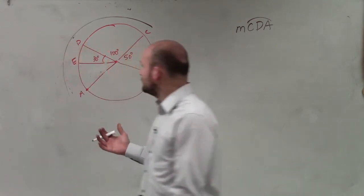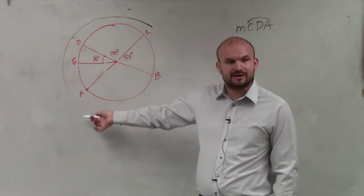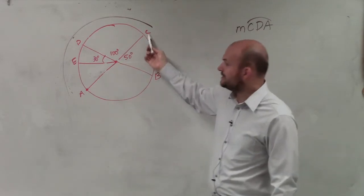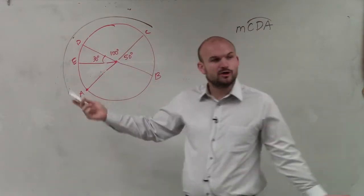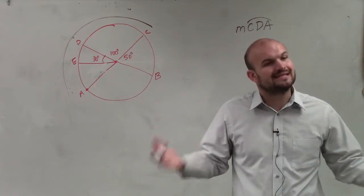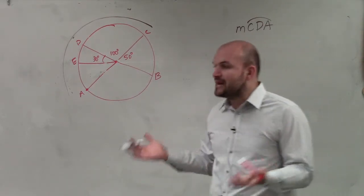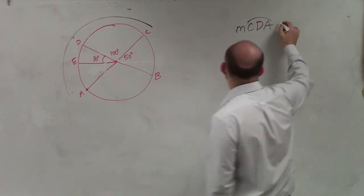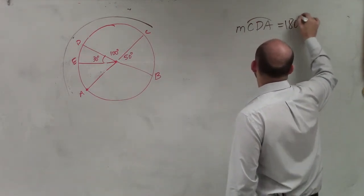But in this case, what we look at is they said that line AC is the diameter. So if I'm going to go from C to the other endpoint A, I know I'm taking half of a circle, which is the last definition we talked about, which is a semicircle. And the measurement of a semicircle is always going to equal 180 degrees.